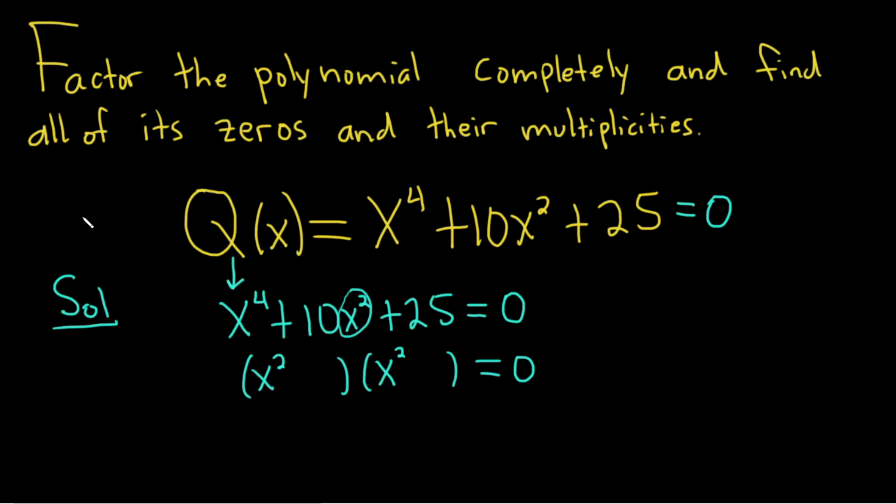Oftentimes the way this is taught is people make a substitution, like they'll call this piece u and this becomes u squared. But you can just put this piece here and this piece here. When you multiply them, you get x to the fourth. So you need two numbers that multiply to 25, so 5 and 5 are a good first guess. And if you make them both positive, everything works out beautifully.